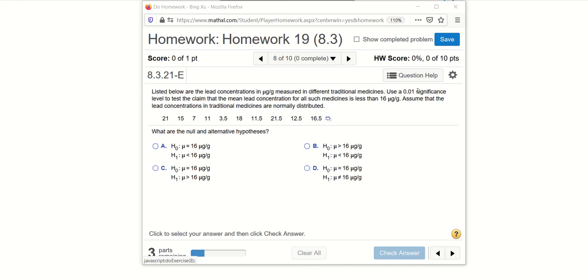Use a 0.01 significance level, so we know our alpha is 0.01, to test the claim that the mean lead concentration for all such medicines is less than 16 micrograms per gram. Here's the claim.